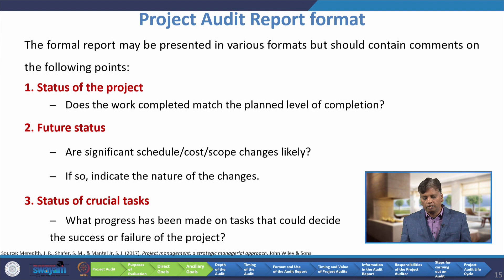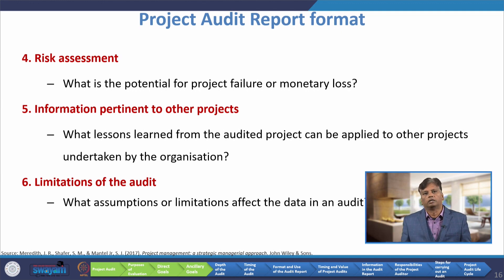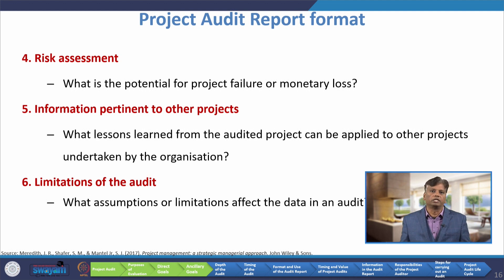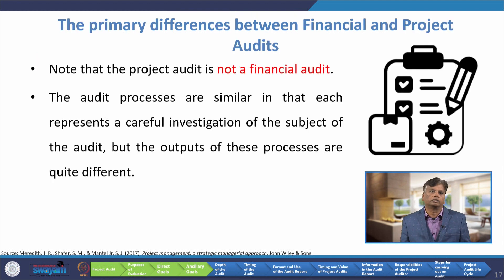What progress has been made on tasks that could decide the success or failure of the project? The fourth item in the audit report is risk assessment — what is the potential for the project's failure or monetary loss? The next comment expected is information pertinent to other projects: what lessons learned from the audited project can be applied to other projects undertaken by the organization? Then the limitations of the audit: what assumptions or limitations affect the data in the audit?